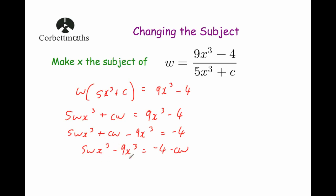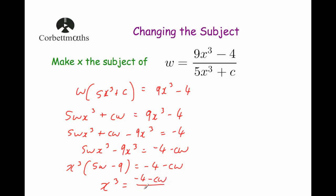Now we want the x's on their own, so let's factorize. Let's take the x cubed out. That will give us x cubed bracket 5w subtract 9 close brackets equals negative 4 subtract cw. Now we want the x's on their own, so we're going to divide both sides by 5w subtract 9. That gives us x cubed equals negative 4 subtract cw over 5w subtract 9. Lastly, we don't want x cubed — we just want x, so we're going to cube root both sides. That leaves us with x equals the cube root of negative 4 subtract cw over 5w subtract 9.